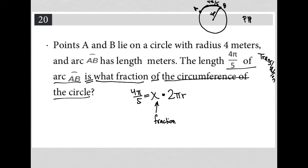So hopefully you caught that. I just literally translated this just about word for word. 4π over 5 is what fraction - again, that's what X is, because I don't know what it is - of the circumference of a circle. Of means multiply, and the circumference of a circle is 2πR.